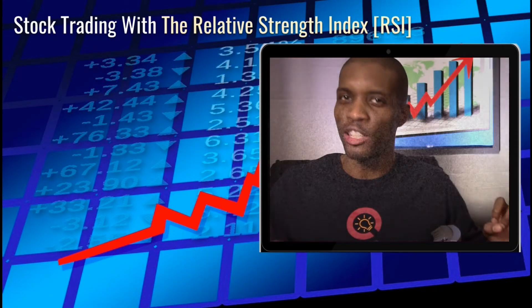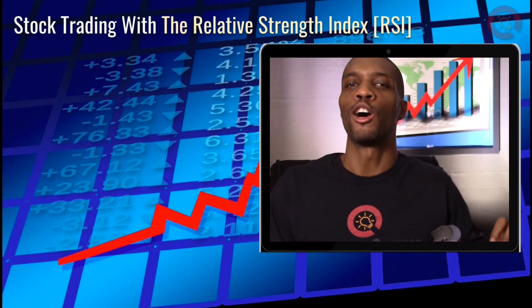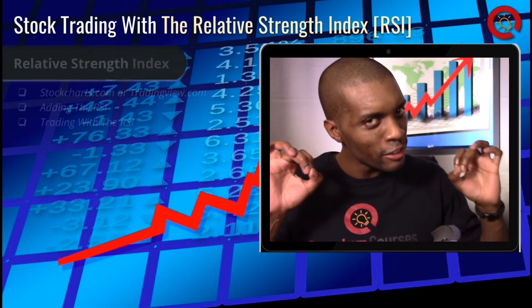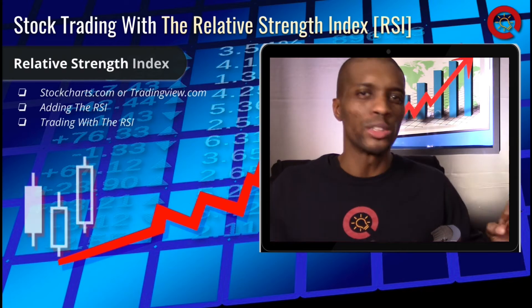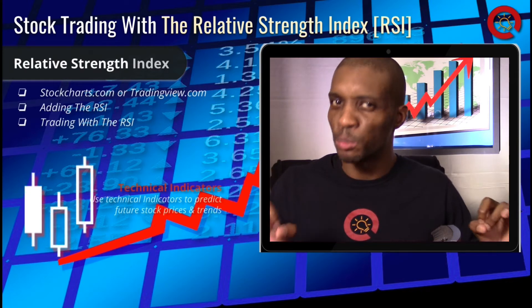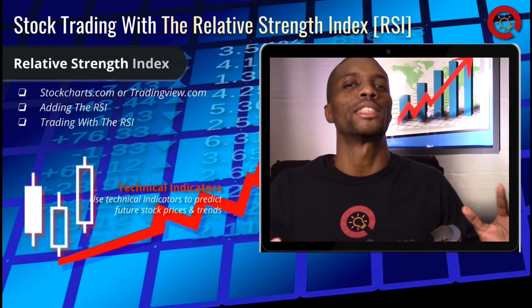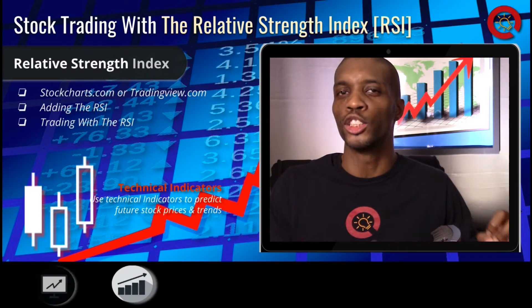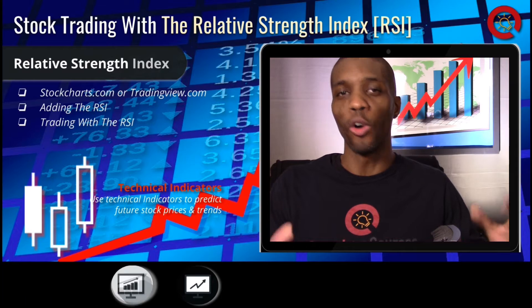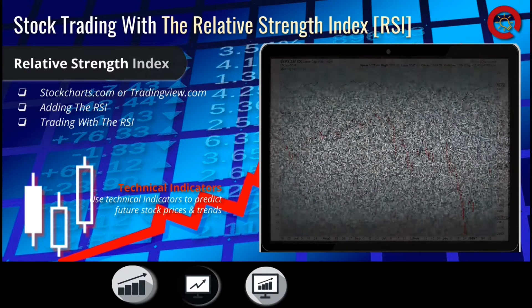Now, let's take a look at using the RSI, also known as the Relative Strength Index. The RSI shows how strong a stock is moving in the current direction and can give insight into whether a stock is overbought or oversold.